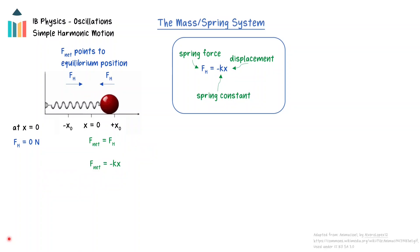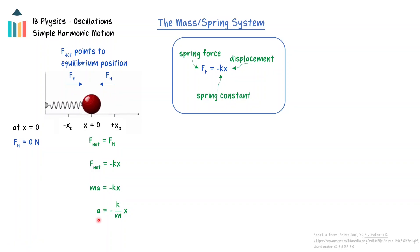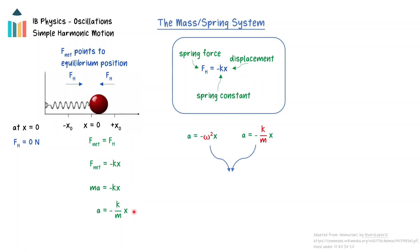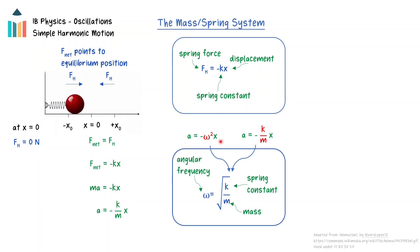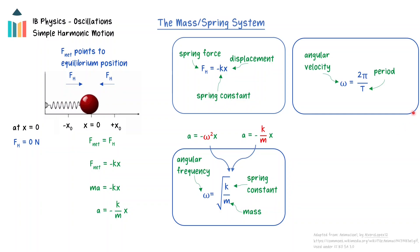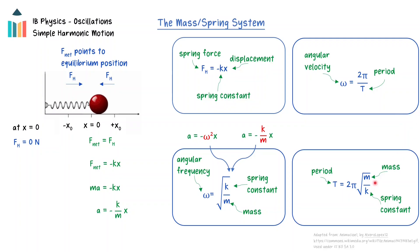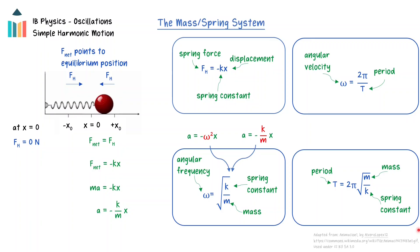This can be shown mathematically by finding the acceleration of the mass. Using Newton's second law, F_net = ma, and solving for the acceleration gives: a = -(k/m)x. Comparing this equation to the defining equation of simple harmonic motion, a = -ω²x, shows that the angular frequency for the mass is equal to the square root of k over m, the spring constant divided by the mass. Because omega is equal to 2 pi divided by the period, the period of the system can be found to be 2 pi times the square root of the mass divided by the spring constant k. Notice that the period of a mass-spring system is independent of the amplitude and is determined by the physical constants of the system, the mass and the spring constant.